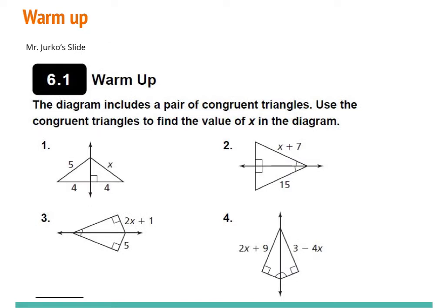Our warm-up: the diagram includes a pair of congruent triangles. Use the congruent triangles to find the value of x in the diagram. What's special about these is it already tells us they're congruent, so we're just going to find the corresponding part for x and then solve for it. What should x be in the first one? Five — very good.